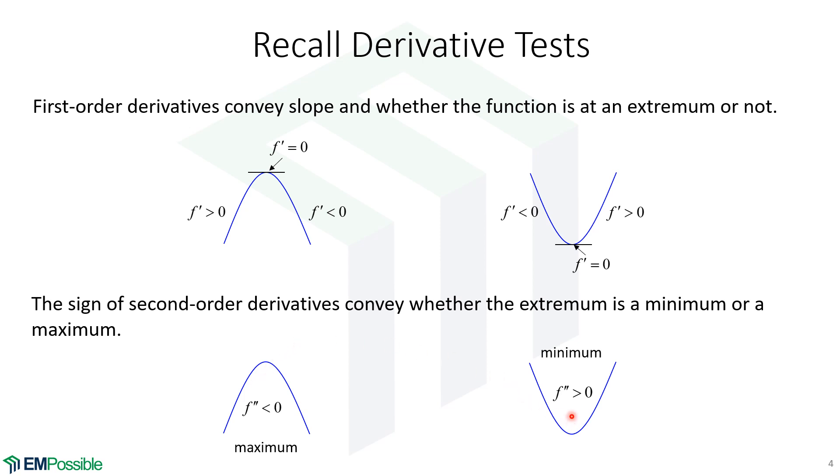Likewise, if that second derivative is positive, we have to be transitioning from a negative first derivative to a positive first derivative. And we're looking at a minimum.